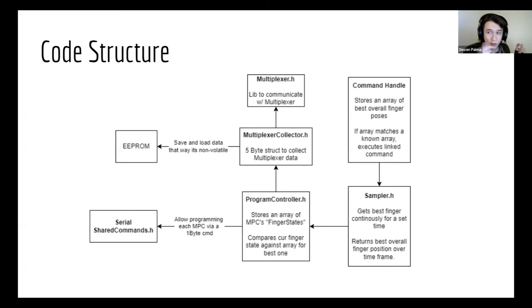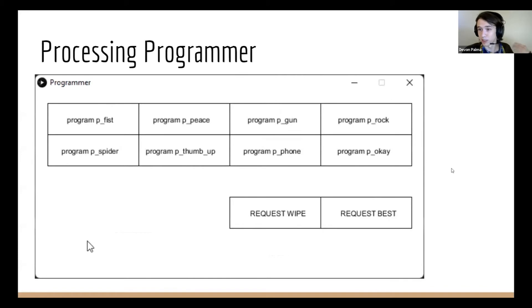Then, alongside that, the program controller is also connected into the serial communications, which allows me to communicate with it over a GUI I made in processing. This allows me to very easily tell the controller to say, hey, this is a gun, program that. Or, hey, this is the rock on sign, program that. And so on. Once I have a few of these hand signs programmed, I can then click request best, and that will tell me the expected hand position my hand is currently in.